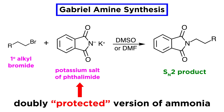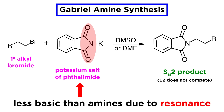Phthalimide can be seen as a doubly protected version of ammonia. This protection avoids multiple alkylations and imparts reduced basicity onto the nucleophile, which makes E2 eliminations unlikely. The reason this substrate is less basic than a primary amine is because it has negative charge delocalized across two carbonyl groups, which means it is highly stabilized and therefore less prone towards acting as a base.